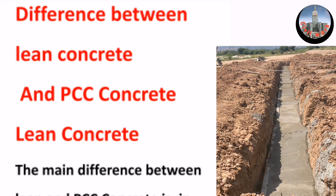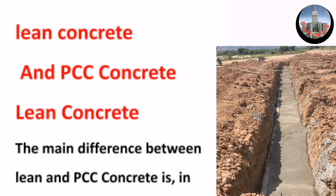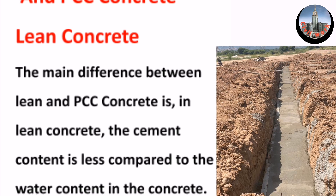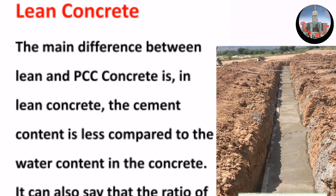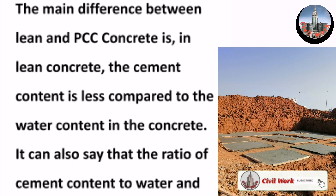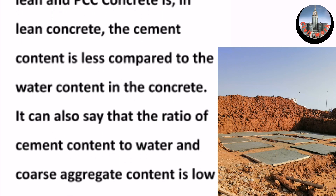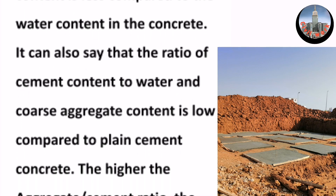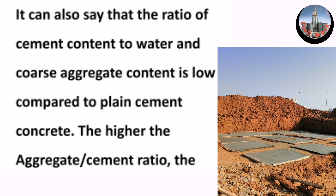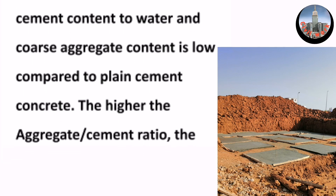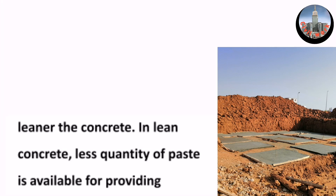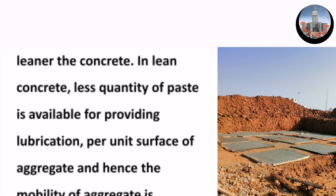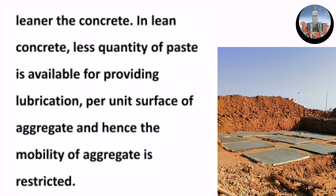The main difference between lean concrete and PCC concrete is that in lean concrete, the cement content is less compared to the water content. The ratio of cement content to water and coarse aggregate content is low compared to plain cement concrete. The higher the aggregate-to-cement ratio, the leaner the concrete.